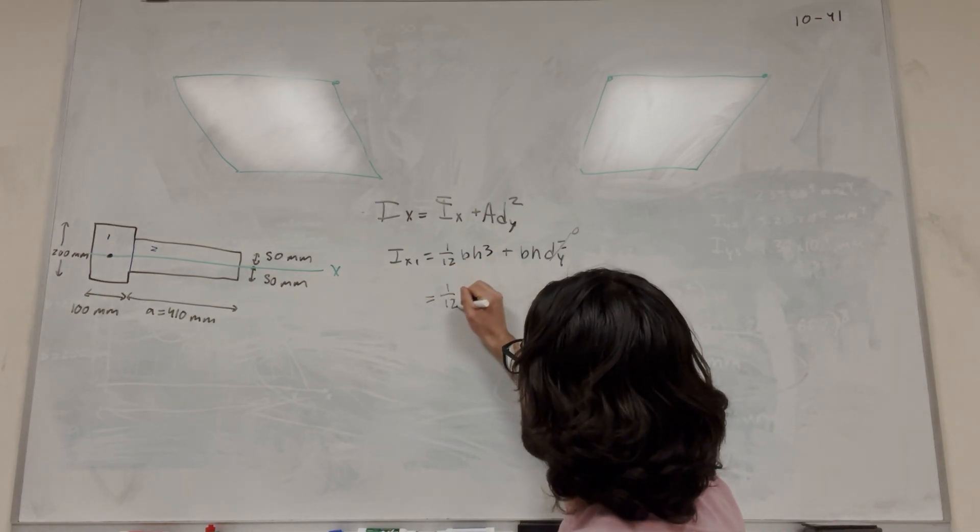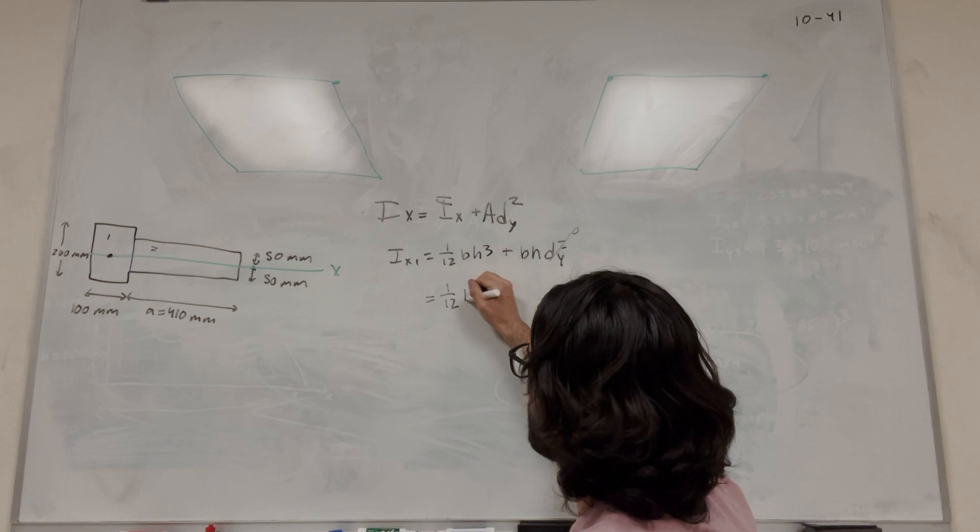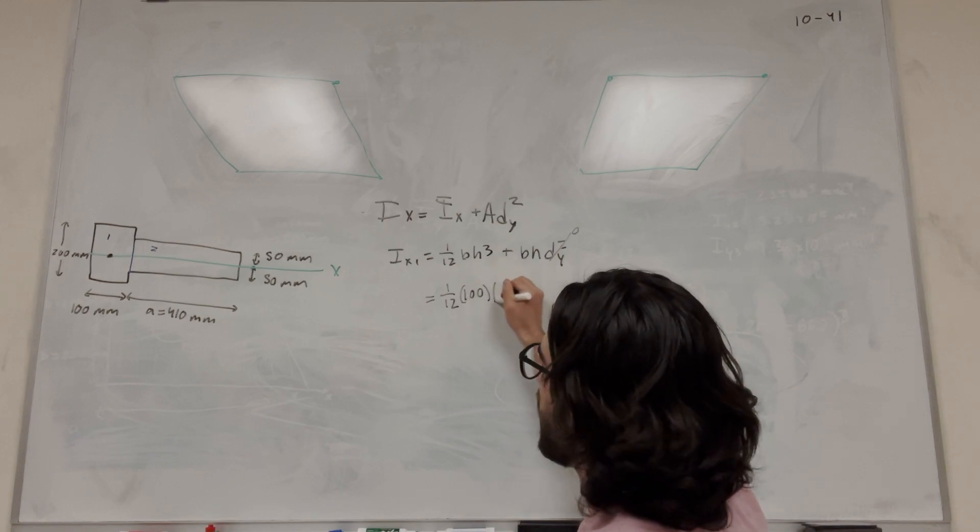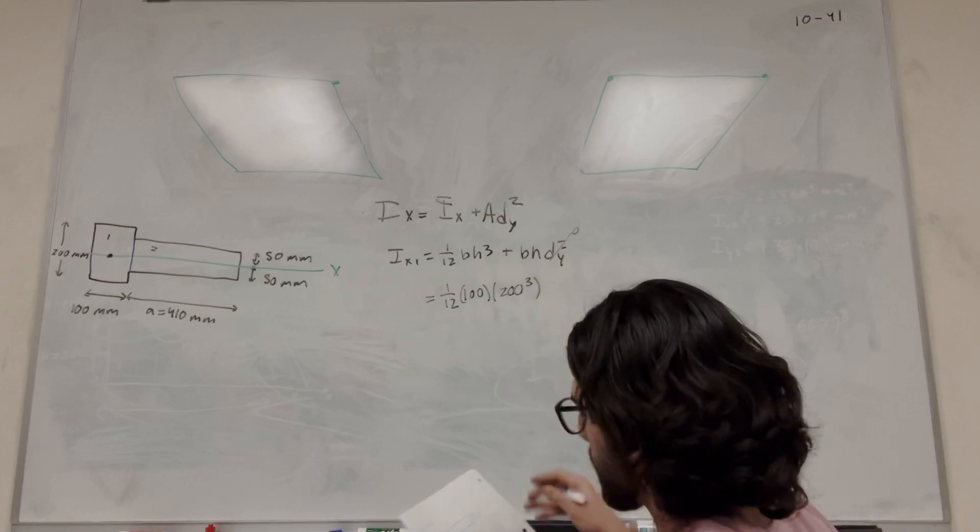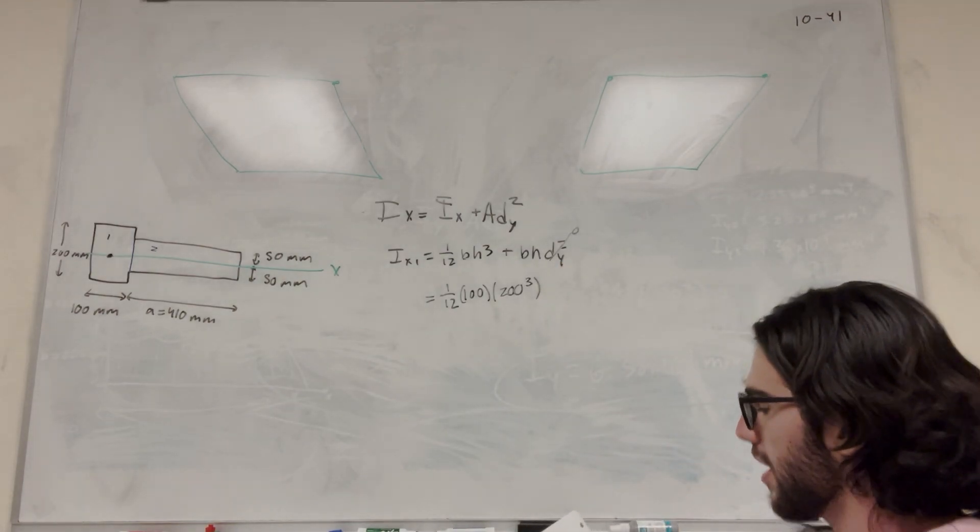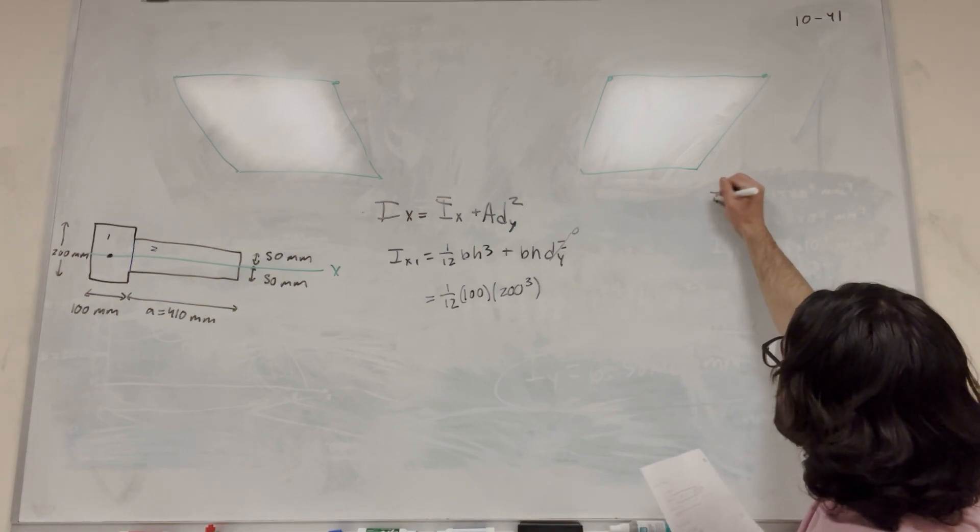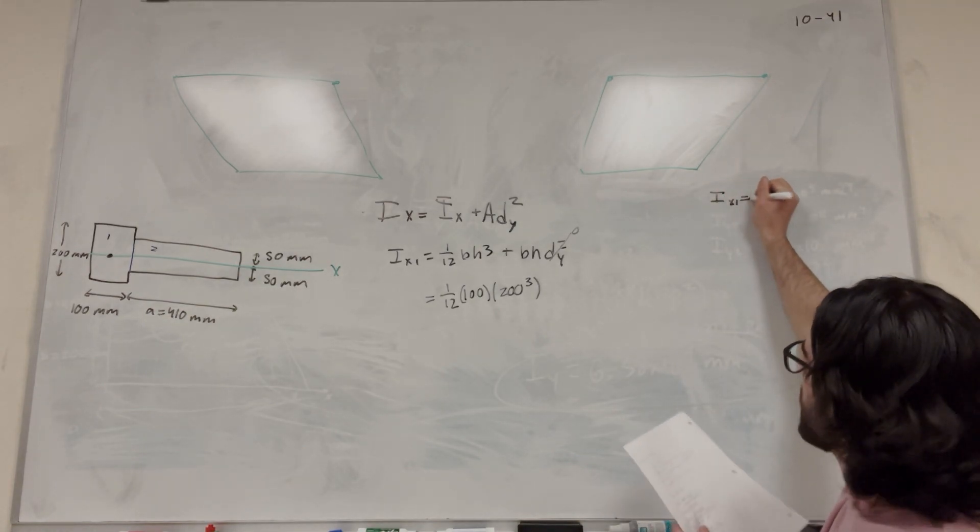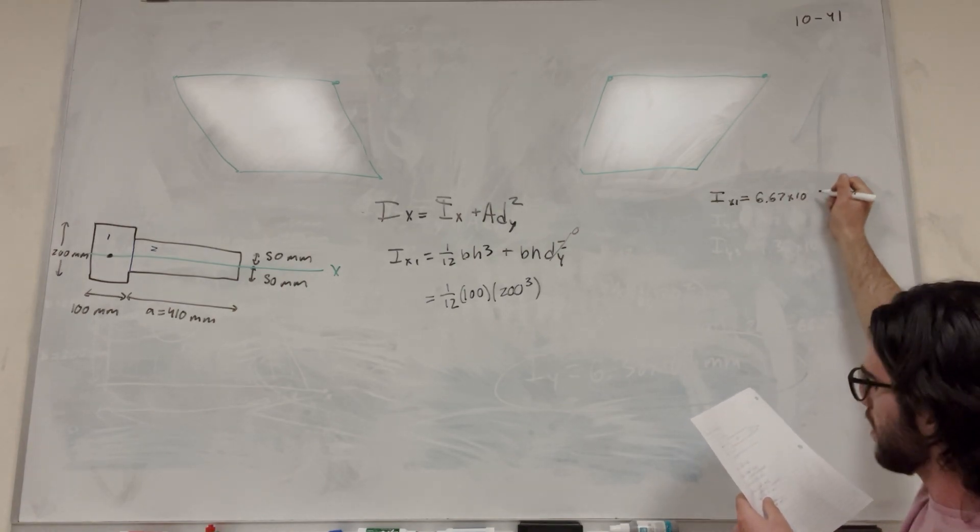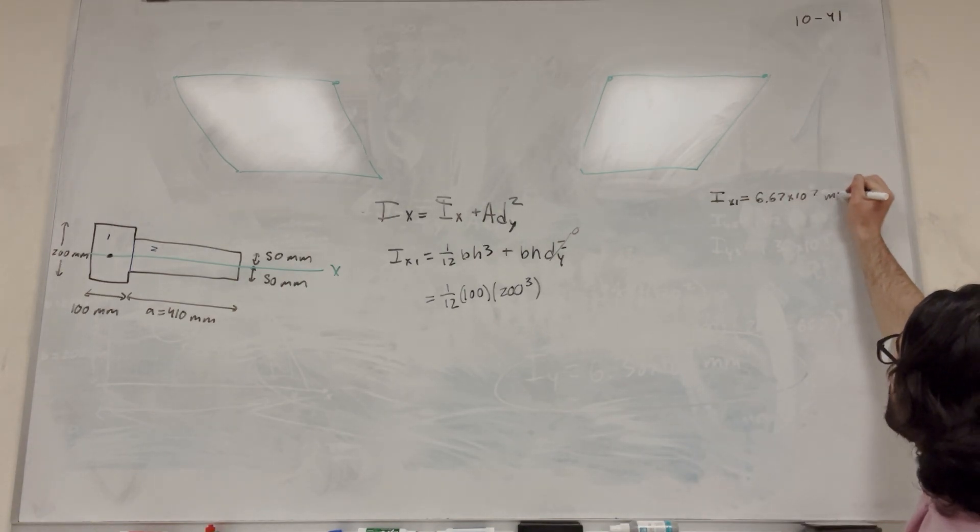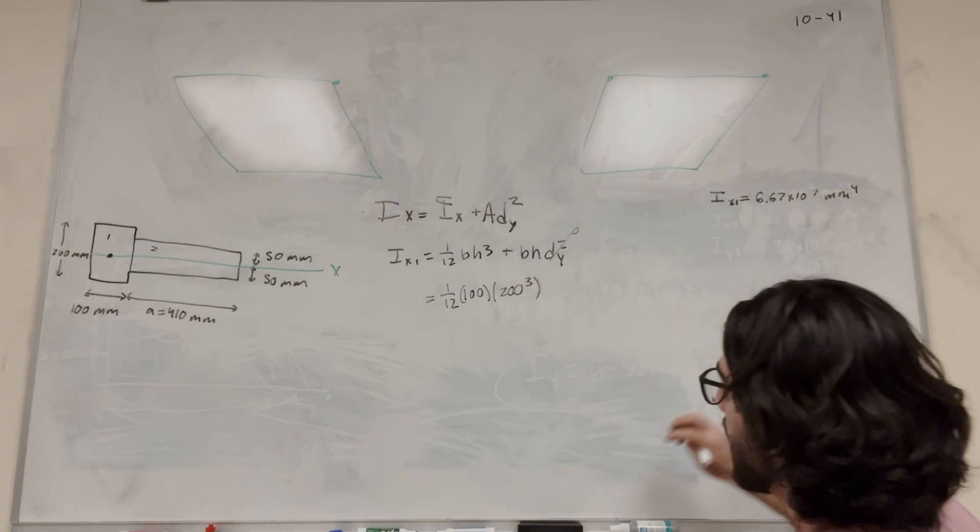So we're going to go 1 over 12, the base is 100, and the height is 200, and then we cube that. You plug that in and you get I_x1 equals 6.67 times 10 to the 7th millimeters to the fourth.